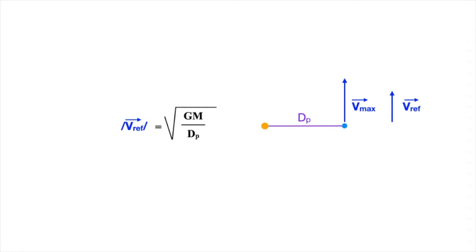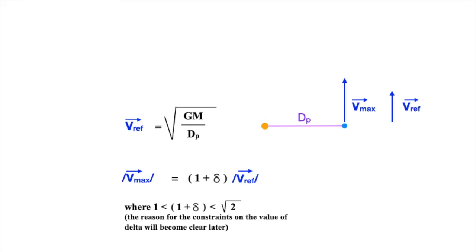Now, let's say that the velocity given to us, Vmax, is somewhat greater than the reference velocity. We can write it as follows: the magnitude of Vmax equals the quantity 1 plus delta times the magnitude of Vref, where the quantity 1 plus delta is greater than 1 and less than the square root of 2. The reason for the constraints on the value of delta will become clear later.